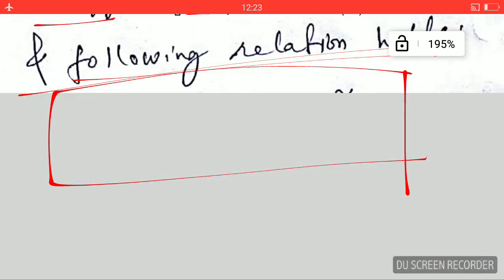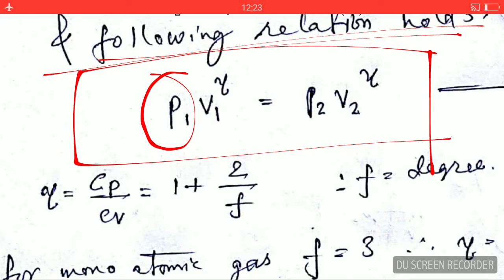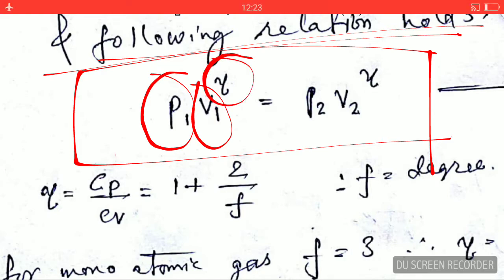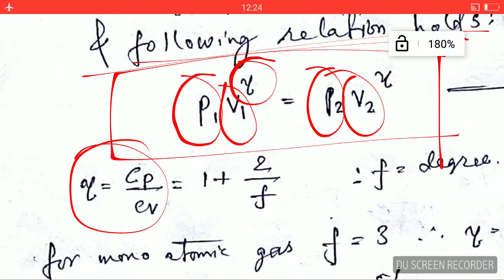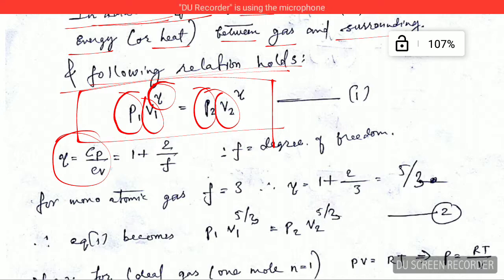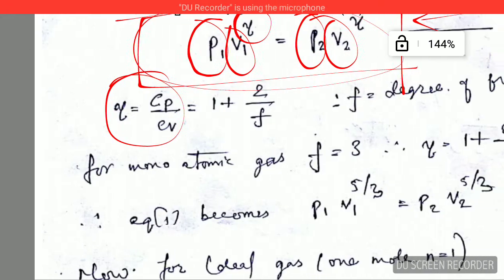Here, P₁ is the initial pressure of the gas, V₁ is the initial volume, γ is the ratio Cp over Cv, P₂ is the final pressure, and V₂ is the final volume. You should know these quantities in this adiabatic formula.